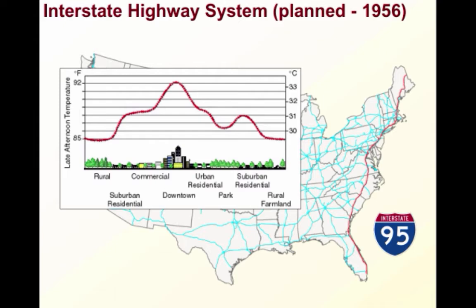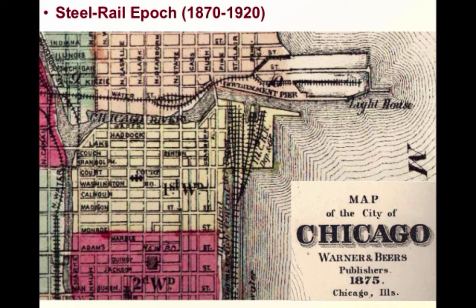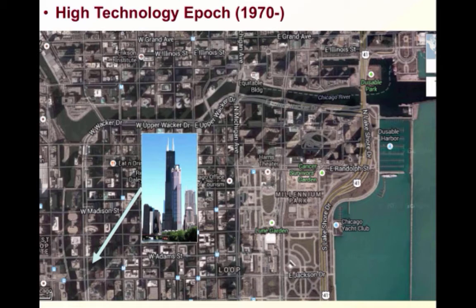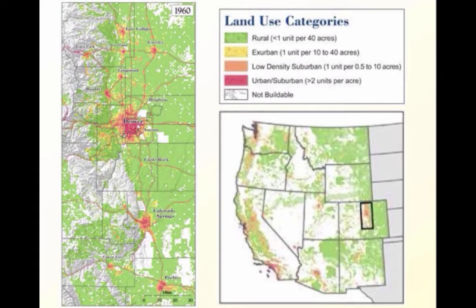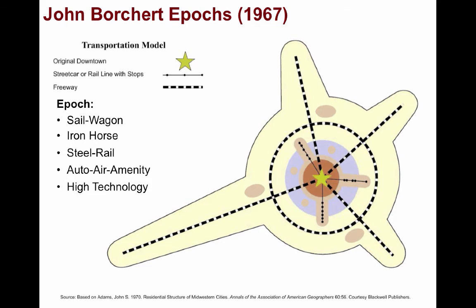Finally, we come to the High Technology Epoch, which has gone from 1970 to today, influenced by the era of jet propulsion and increasingly complex electronic, satellite, computer, and network-based technologies. We can see Chicago back in 1875 during the Steel Rail Epoch, progressing forward into the High Technology Epoch we see today, highlighted by modern buildings such as the Sears Tower constructed in 1973. Looking at Denver and Colorado Springs in Colorado, a map shows relative urban density going from red urban-suburban areas to low-density suburban areas, exurbs, and finally low-density rural areas — showing growth from 1960 to 2000, then projected into 2040. Some geographers have proposed an extension of Borchert's model with new epochs taking into account late 20th century developments and patterns of urban decline up until the 1990s, when there was a resurgence of metropolitan growth.